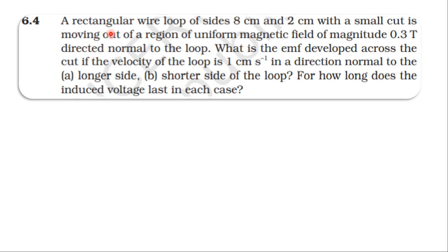From NCERT test book, electromagnetic induction topic, example 6.4. A rectangular wire loop of sides 8 centimeter and 2 centimeter with a small cut is moving out of a region of uniform magnetic field of magnitude 0.3 tesla, directed normal to the loop. What is the EMF developed across the cut if the velocity of the loop is 1 centimeter per second in a direction normal to the longer side, or normal to the shorter side of the loop?